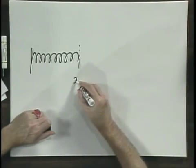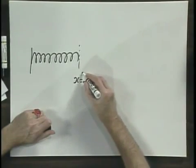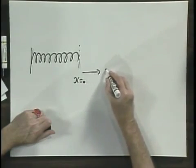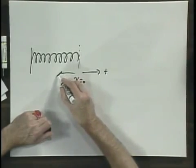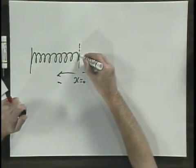Perhaps the easiest example of a simple harmonic oscillation is a spring with an object at the end. Let's suppose we have such a spring here. This would be the spring in relaxed position. I call this x equals zero, and I arbitrarily call this the plus direction and this the minus direction. So this is the relaxed spring.